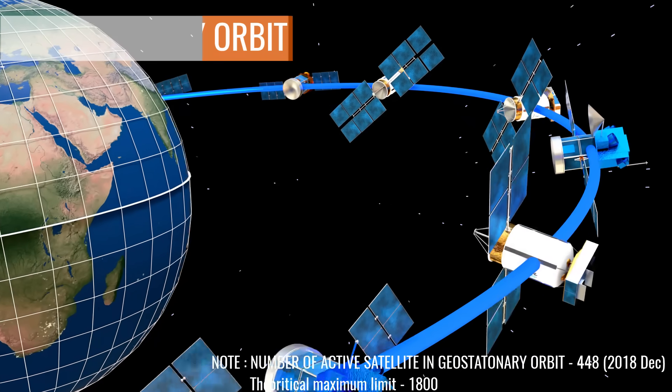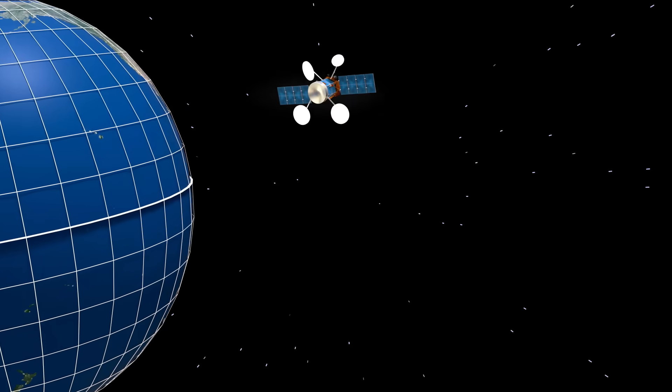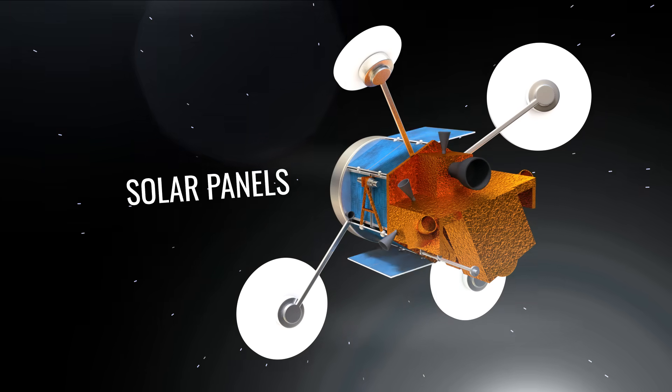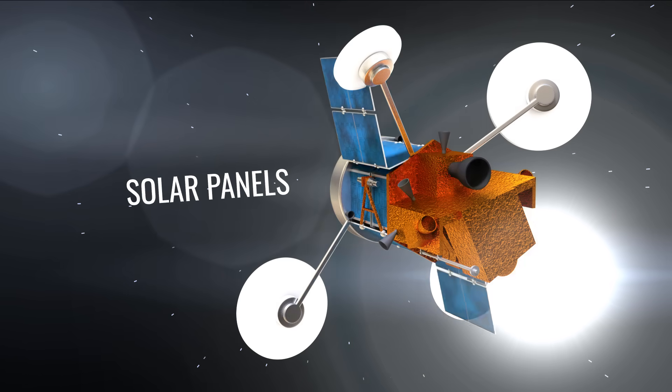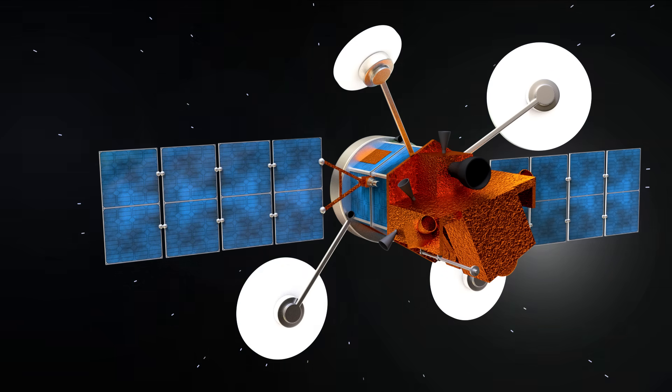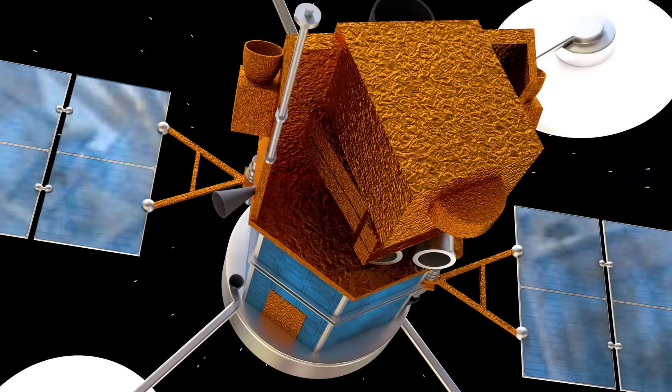Now, let's find out a few things about the satellite itself. The energy required for a satellite mostly comes from its solar panels. However, if the satellite is not facing the Sun, a battery pack helps to continue its operations.